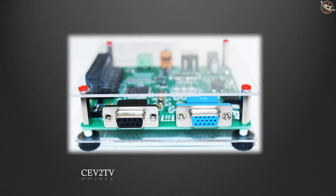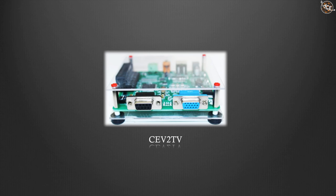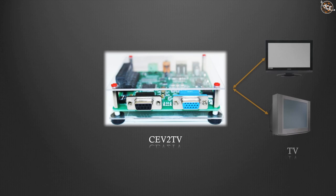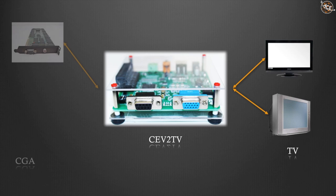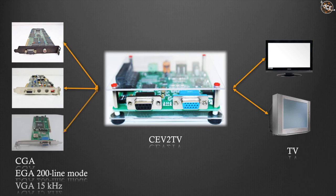CV2TV is the acronym of CGA, EGA, VGA, to television set. CV2TV is able to display on a standard television set the CGA, the EGA when used in a 200 line mode, and the VGA when used at 15 kHz.